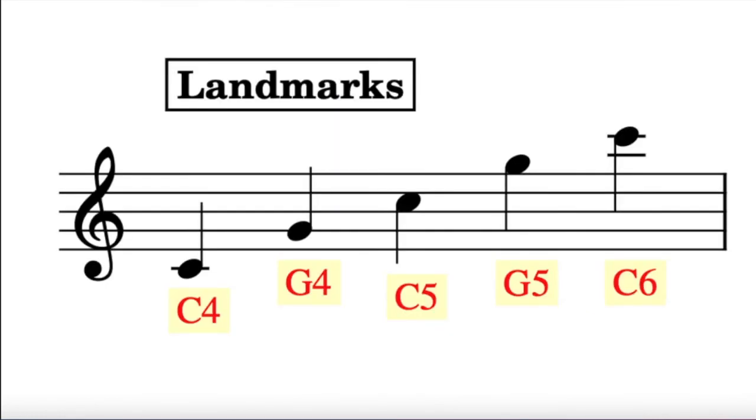Landmarks on the treble clef include a note on the first ledger line below the treble clef, the middle C. A note on the second line from the bottom, the line that the treble clef curls around. Remember the treble clef is also the G clef, and this note is a G.